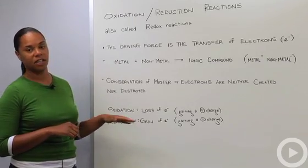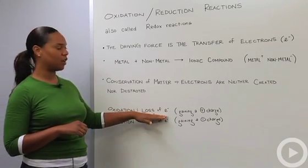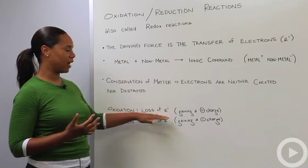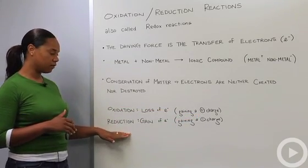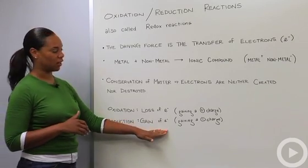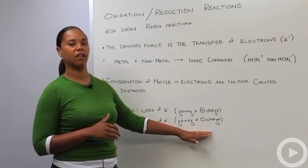So what is oxidation? Oxidation is the loss of electrons or you can also think of it as the gaining of a positive charge. Reduction is the gain of electrons or the gaining of a negative charge.